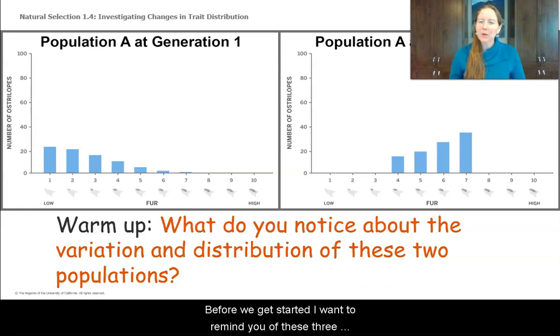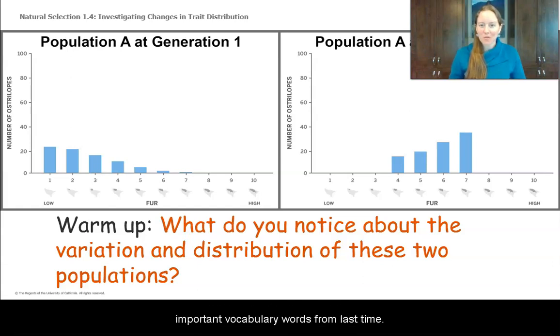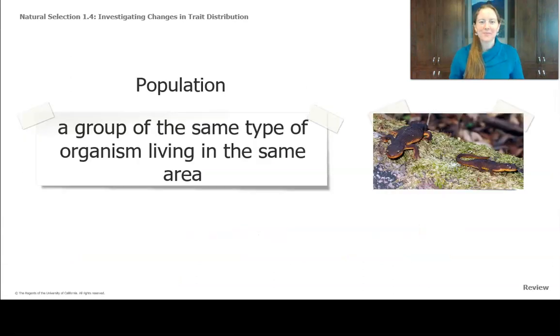Before we get started I want to remind you of the three important vocabulary words from last time. The first important word to review is population. A population is a group of the same type of organism living in the same area. Our focus population for this unit are the rough-skinned newts and the populations we'll be looking at in the sims again are the australopes, the thorn palms, and the carnivans.